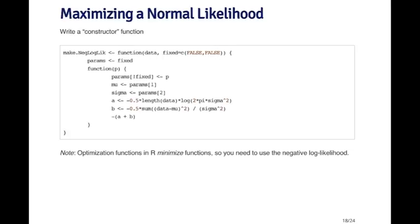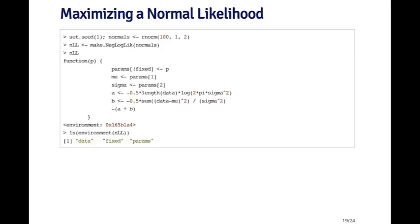I'm defining the log likelihood and taking the negative so that I can minimize it, and then the constructor function returns that function as the return value. Here I'm going to simulate some normal random variables with mean one and standard deviation two, and then I'm going to call my constructor function with these random variables to create my NLL, or negative log likelihood, function.